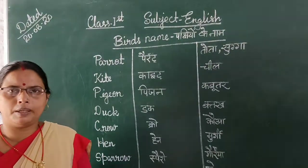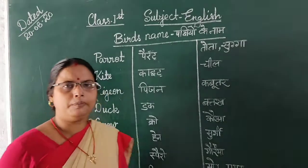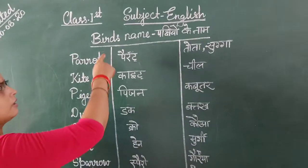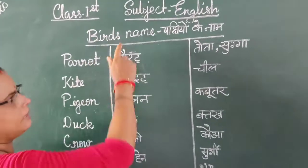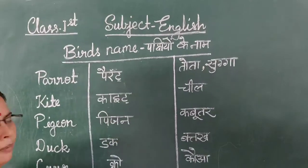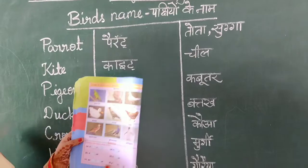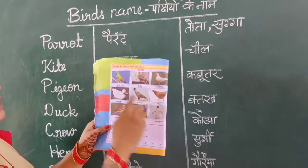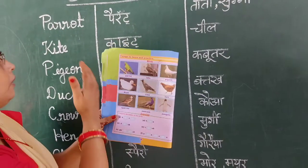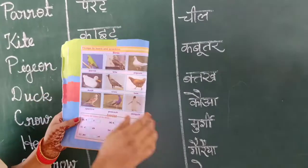Here we are from class first. Today we write about birds' names. God's name means Pachyon Ke Na. Students, you have a book with birds' pictures. I will write about the birds' pictures.